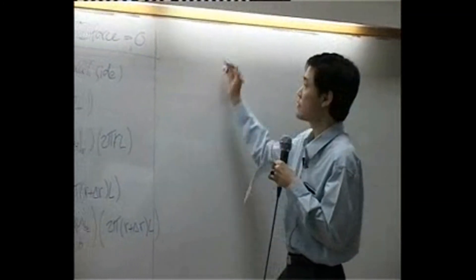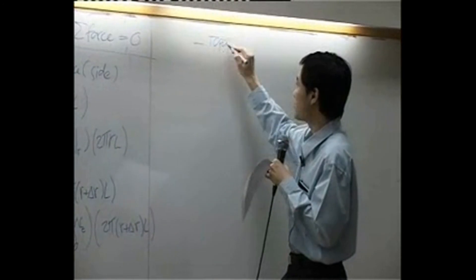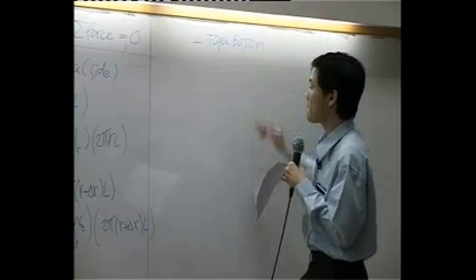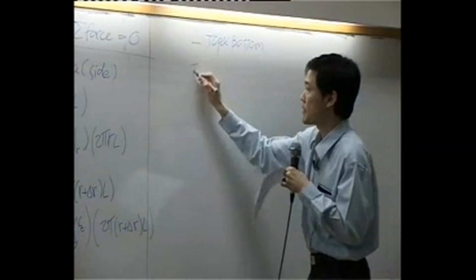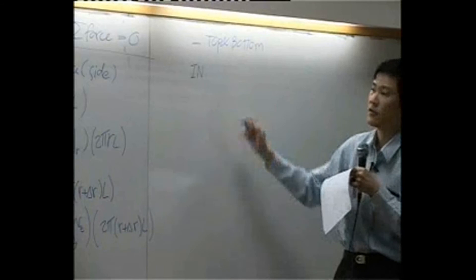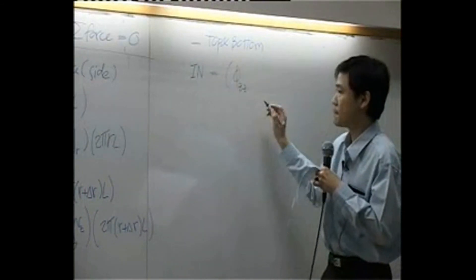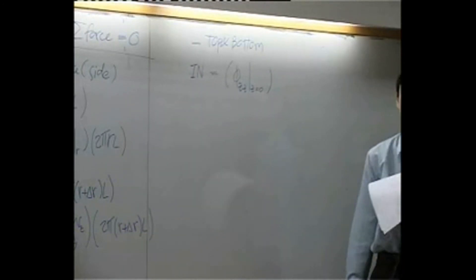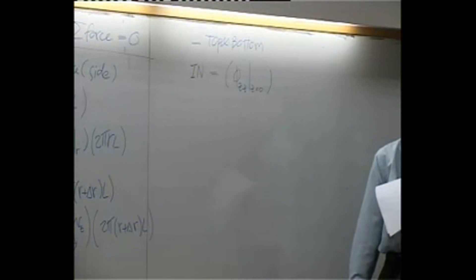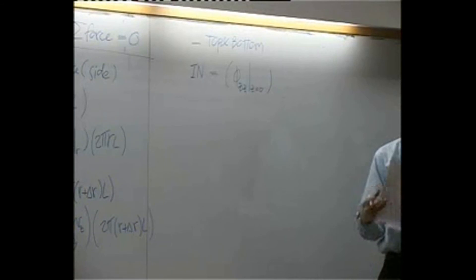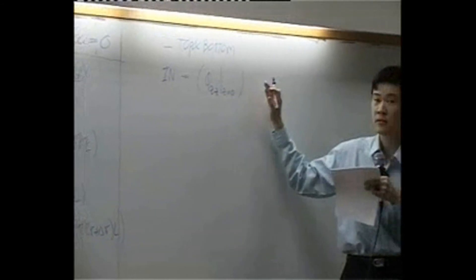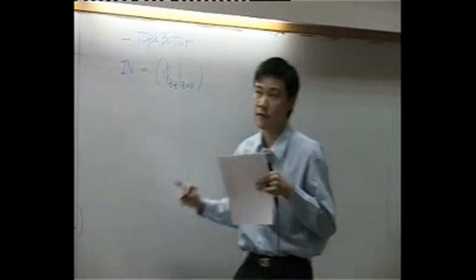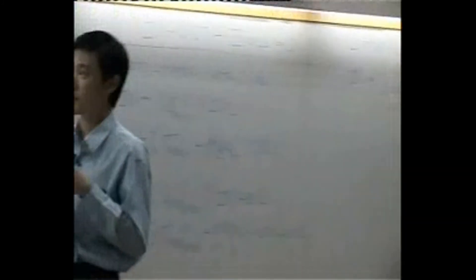The other direction is top and bottom. The input in the top-bottom direction is VZZ coming in at z equal to zero, multiplied by the area perpendicular to this flux.